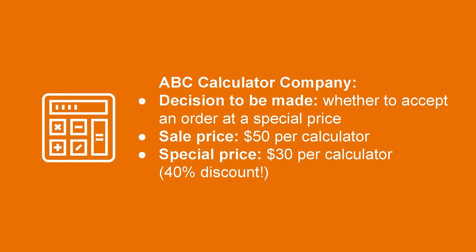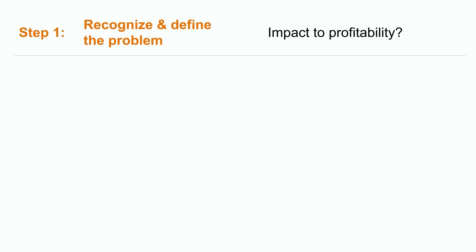In our example, we're looking at a company called ABC Company that manufactures calculators. They're currently faced with a decision on whether to accept an order at a special price from a customer. They usually sell their calculators for $50 each. However, a long-term customer has approached them with a special order of 5,000 calculators, but they're only willing to pay $30 for each calculator — that's a 40% discount. Now let's see how ABC Company could approach this decision using the five-step model.